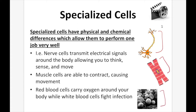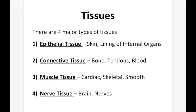They all look very different because they each have a different function. Remember: structure equals function. Tissues. There are four main kinds of tissues: epithelial tissue, which is going to be your skin and lining of internal organs; connective tissue; muscle tissue; and nerve tissue.